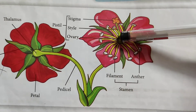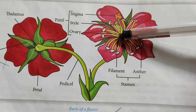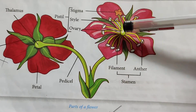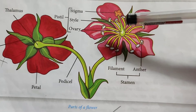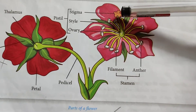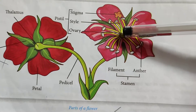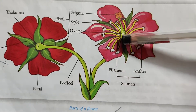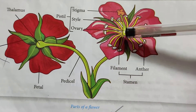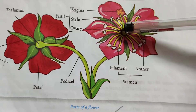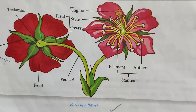The fourth and the innermost whorl is the gynoecium, which is considered the female reproductive part of the flower. It is made up of stigma, style, and the swollen basal portion called the ovary. Gynoecium is also known as carpel or pistil.